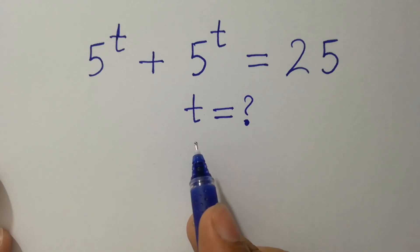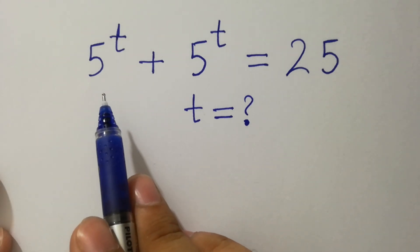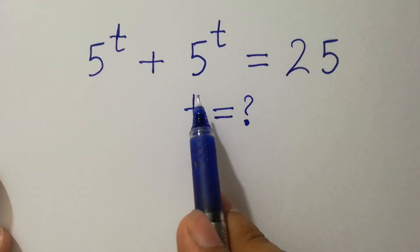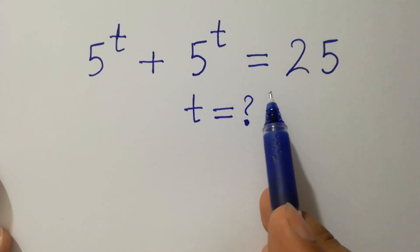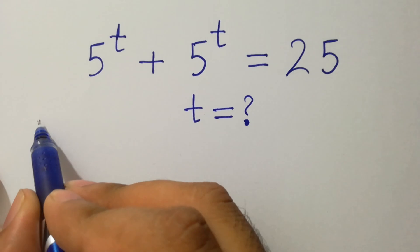Hello friends. Find the value of t if 5 to the power t plus 5 to the power t equals 25. Let's have a solution.